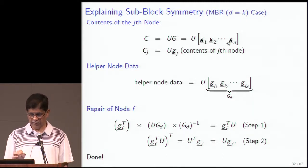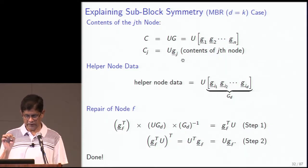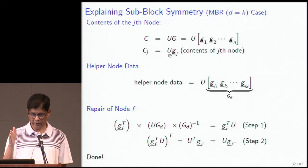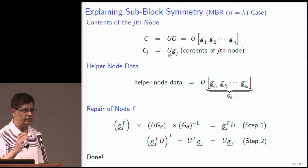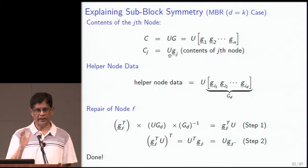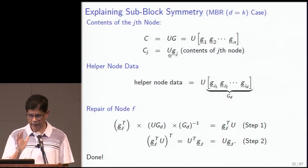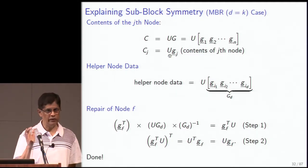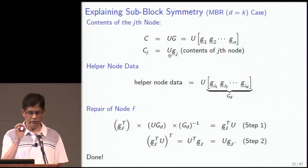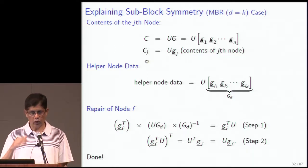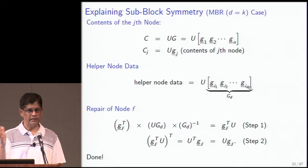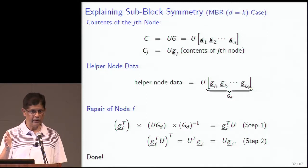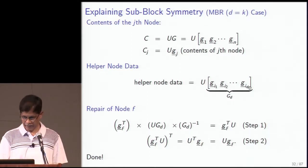Suppose the f-th node has failed — you want to recover U·g_f. You call upon d helper nodes i_1 through i_d. Since the Vandermonde matrix is such that any d columns form an invertible sub-matrix, you can invert that sub-matrix to obtain U times the sub-matrix inverse. Multiplying on the left by g_f^T gives g_f^T · U, but what you want is U · g_f. Taking the transpose gives U^T · g_f, and if U is symmetric, U^T = U, so you're done.